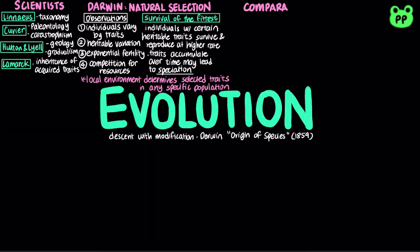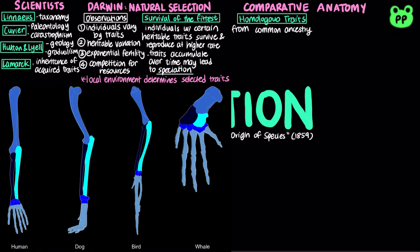Comparative anatomy is the study of similarities and differences in the structures of different species. Homology refers to similarity resulting from common ancestry, such as the bone structure of human, cat, whale, and bat, which are all mammals.